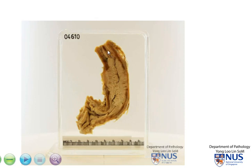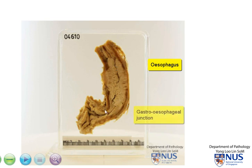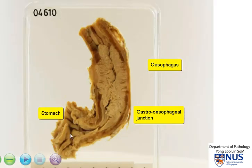This is a segment of the esophagus showing the middle to the distal part of the esophagus, the gastroesophageal junction, and the proximal stomach. We can recognize the stomach by the presence of these mucosal folds called rugae.